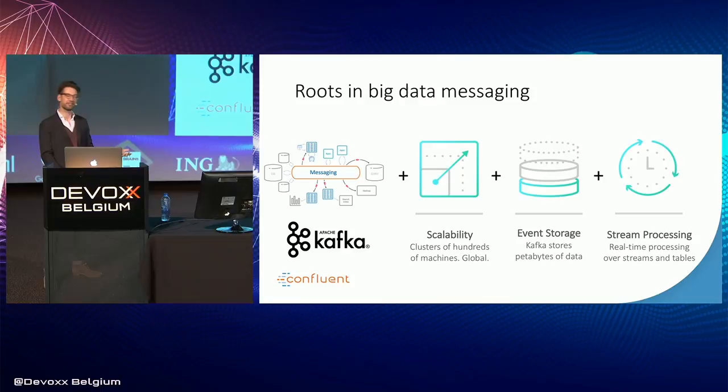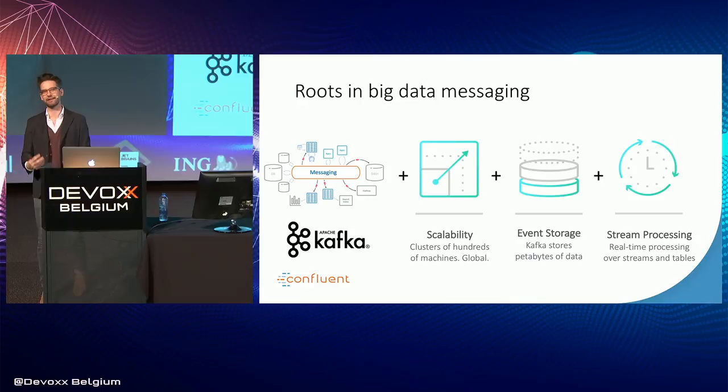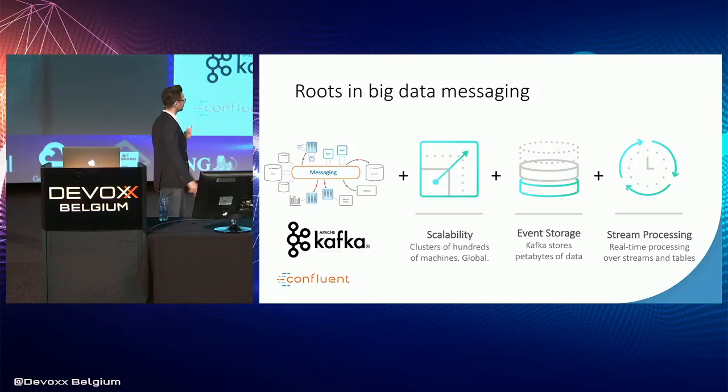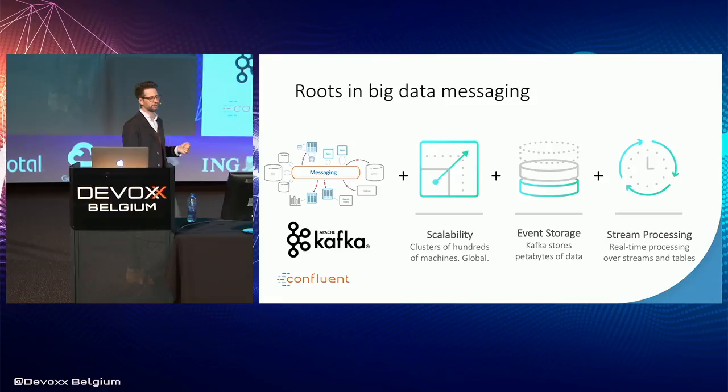For example, we might have something like a mainframe or monolithic application running on-premise. We might suck the data out of that, put it into Kafka, stream it up to the cloud — maybe do fraud detection on the cloud, stream it back down again, put it into another database, or more appropriately, drive an event-driven application off these data sets. We can also store data in Kafka. Kafka stores events as a sequence of messages in an event stream.